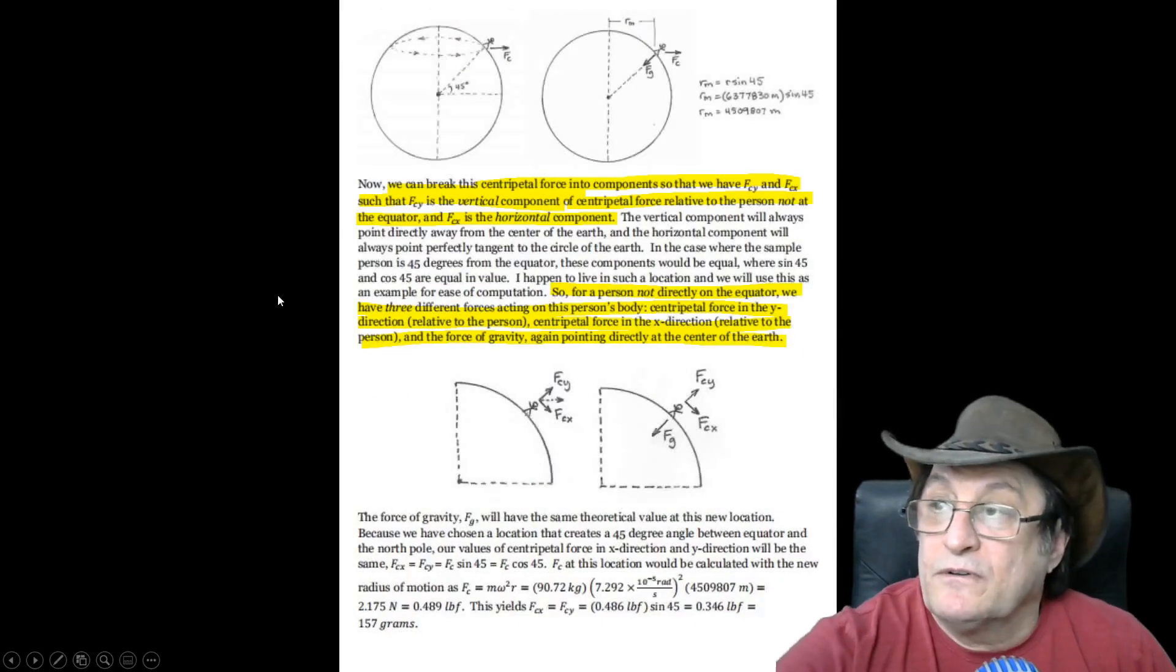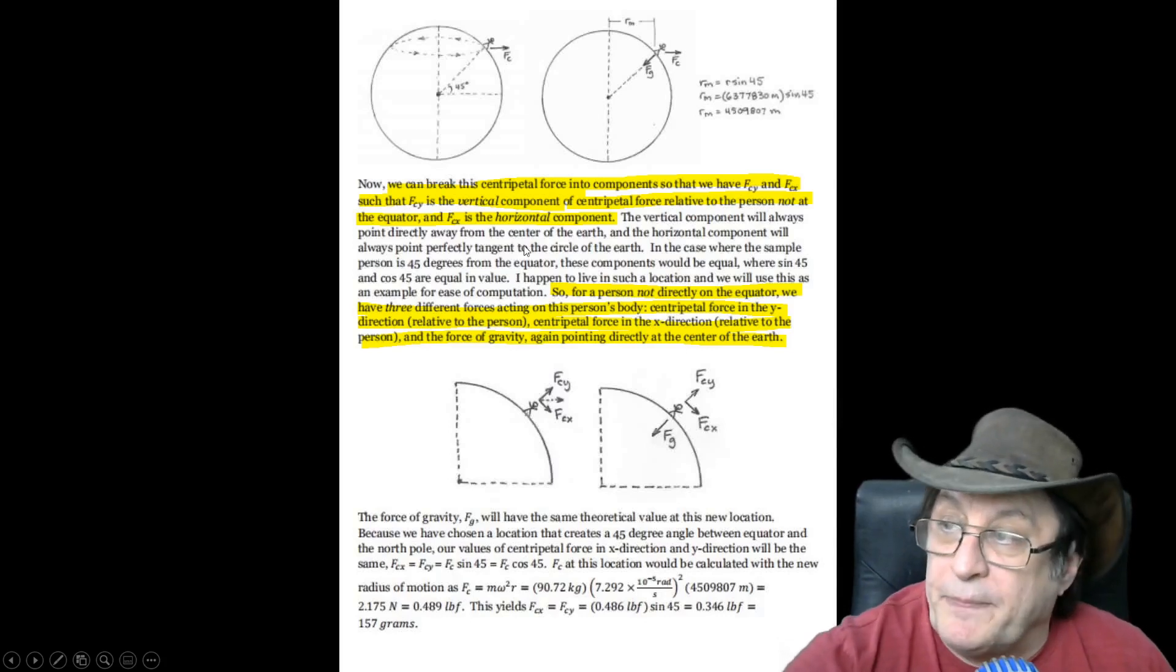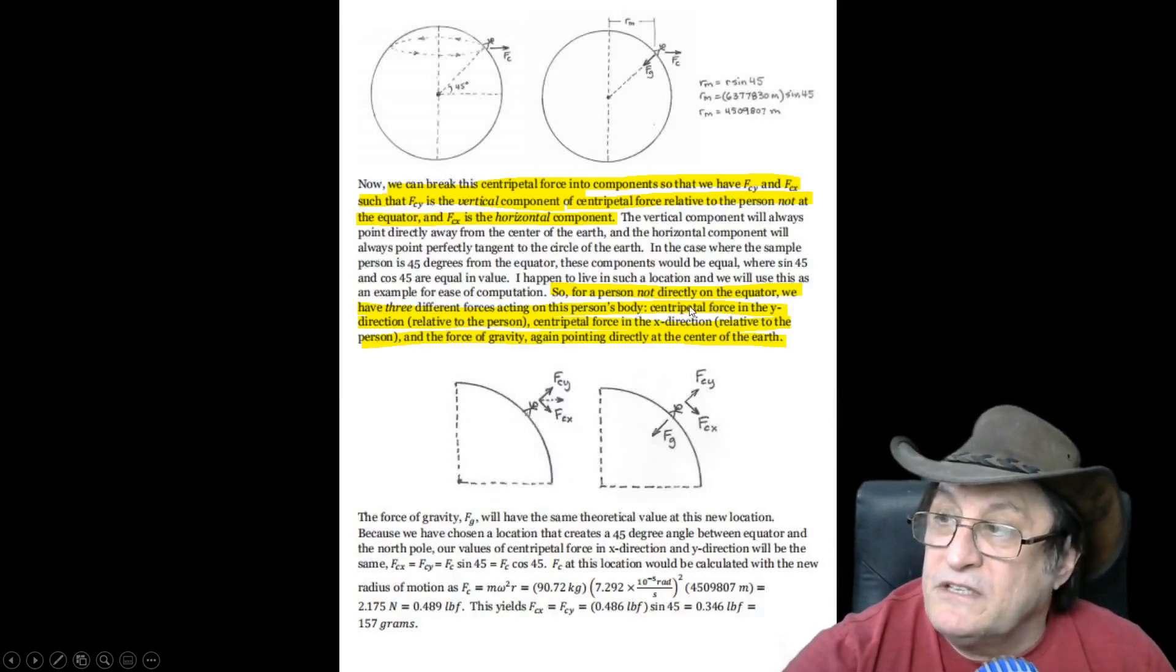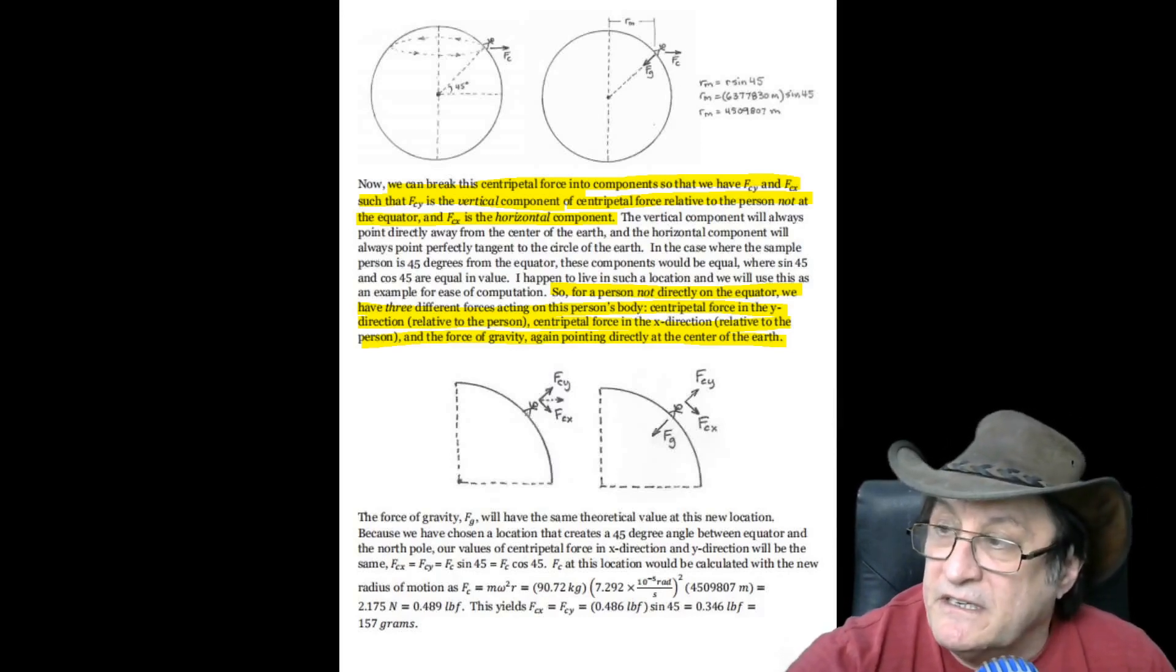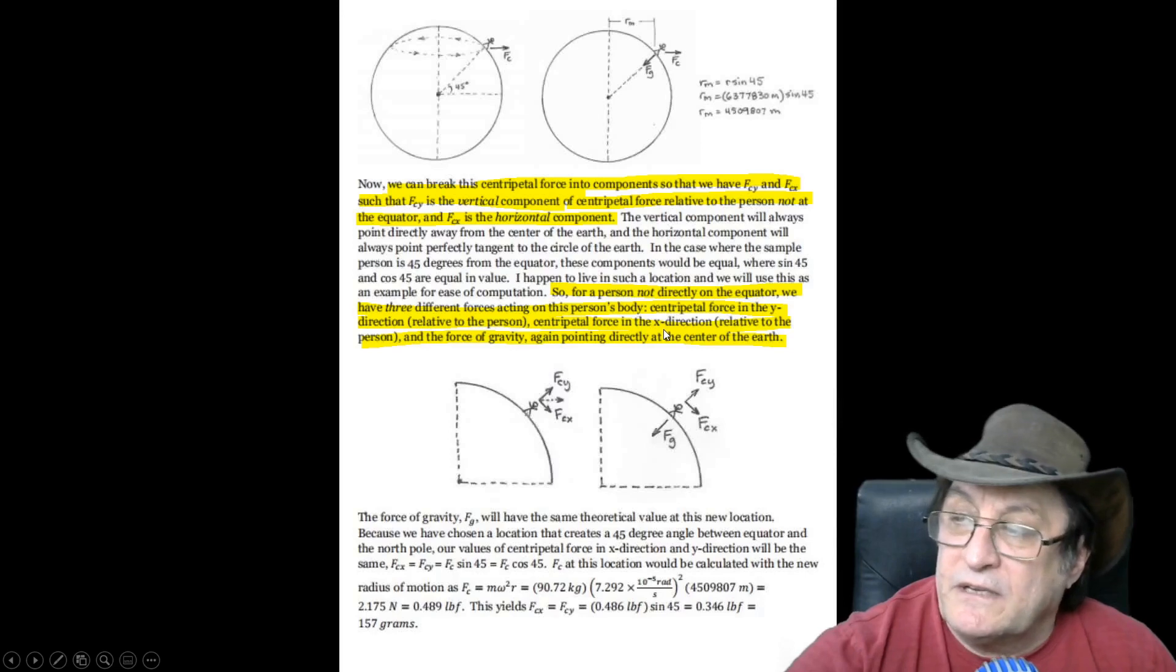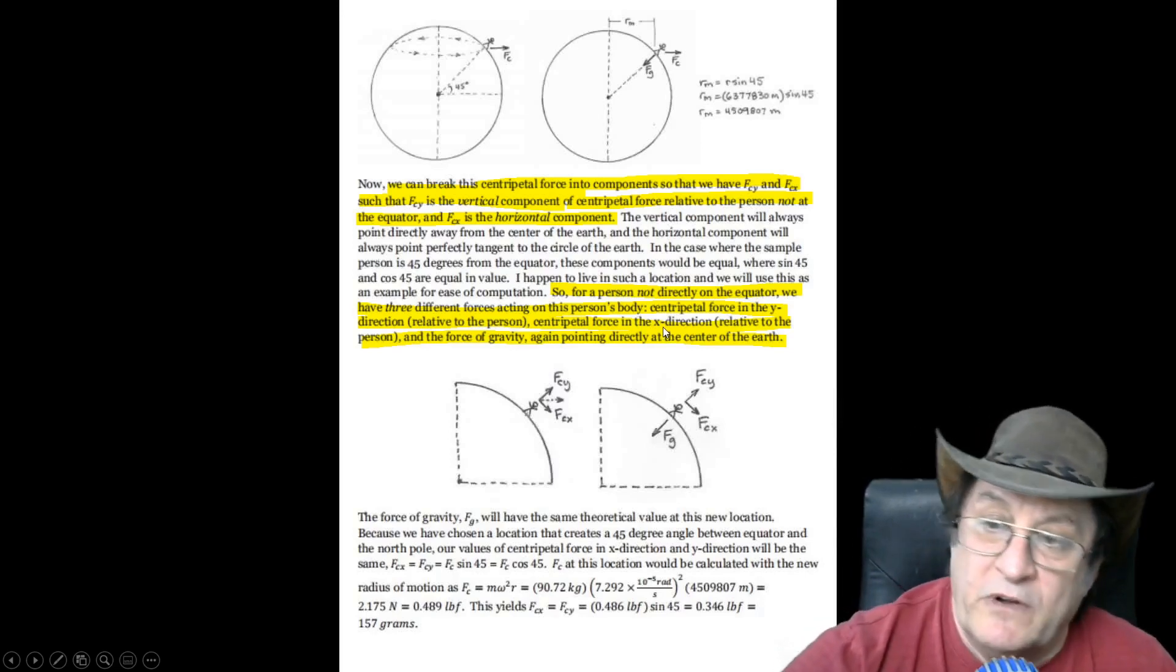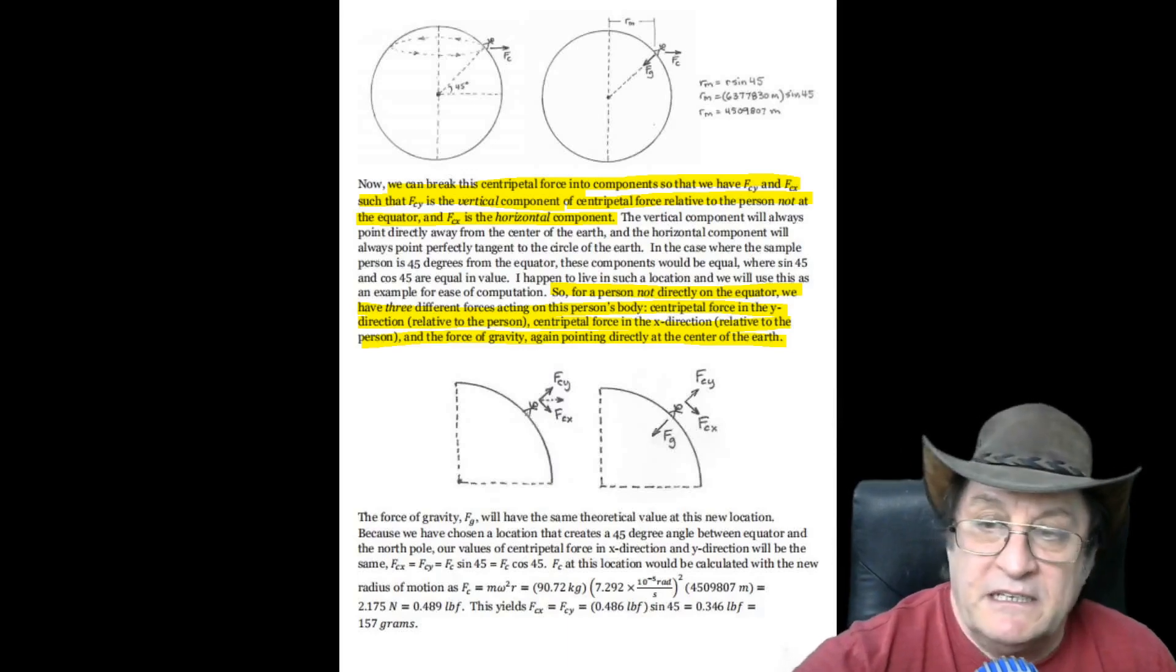Now, he's breaking the centrifugal force into components. He calls them Fcy and Fcx. That's okay. Great. And Fcy is a vertical component relative to the person, and Fcx is the horizontal component. Nothing wrong with that. So, for a person not directly on the equator, we have three different forces acting on this person's body. Well, I wouldn't describe it as three different forces. At a stretch, you could say two, but they all add up to one single apparent force on a person. So, the two that you could say was centrifugal and gravity, and these are two forces. The centrifugal force, you can consider it as components in X and Y direction, but that doesn't make it two more forces. It's all equivalent to one force anyway, and this is pretty much key to the mistakes that are made.